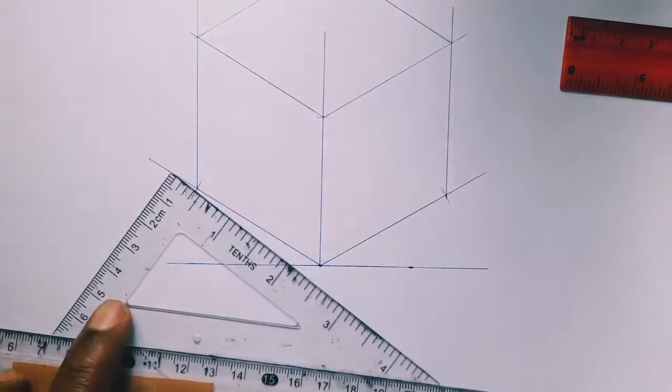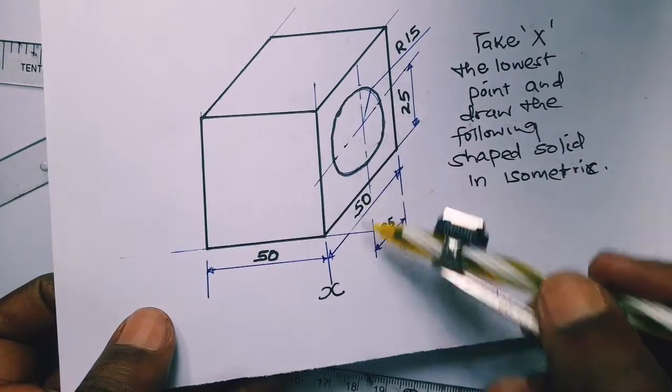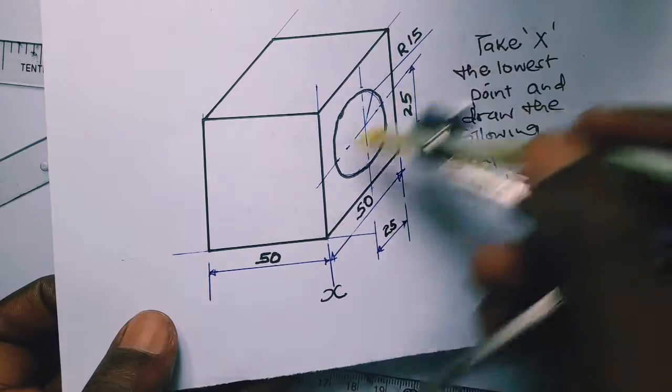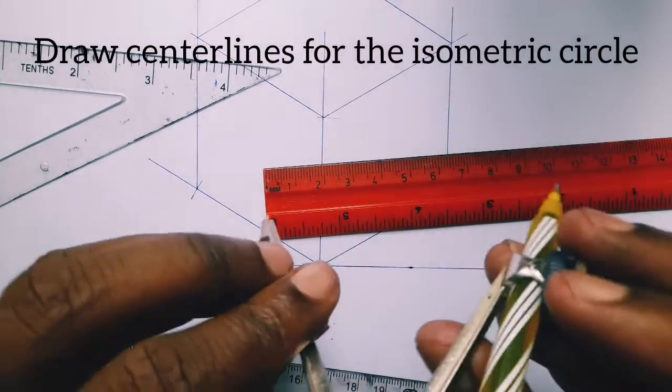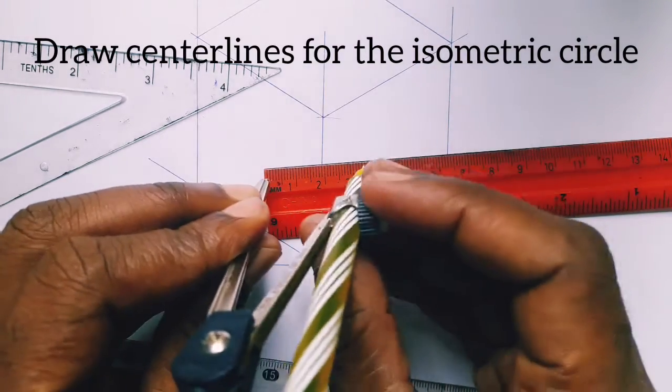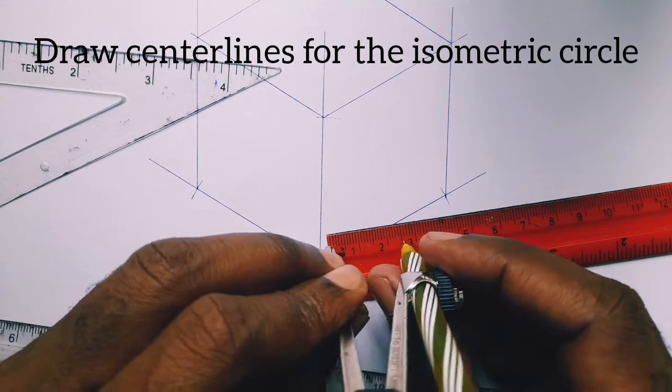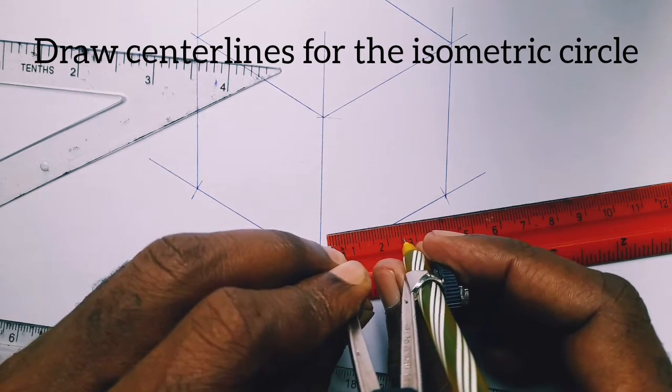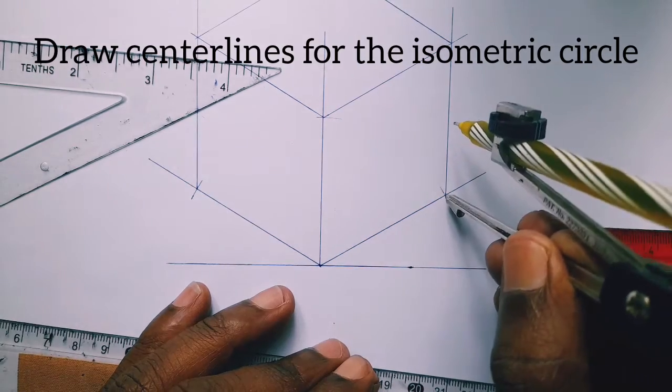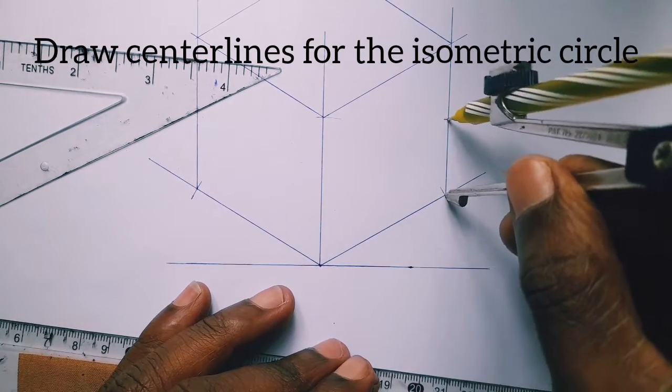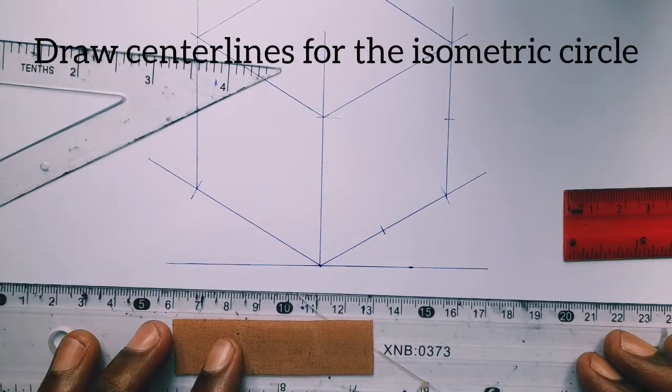And let's get back here. We want to draw our circle in isometric, this circle here, and we have to get to know the center point. Therefore we draw the center lines which are 25 millimeters away from the base and from one side. So we measure 25 millimeters. Basically we want to determine the center point where the two axes meet, the center lines of the circle meet.